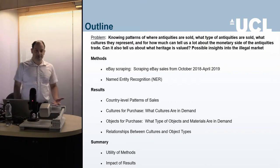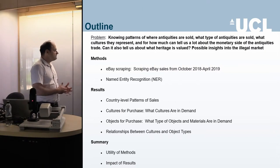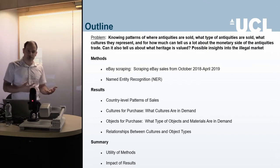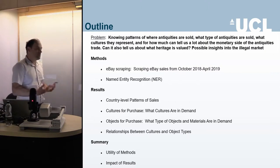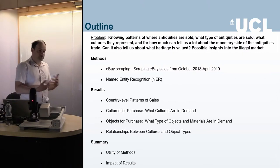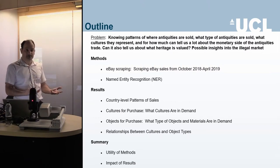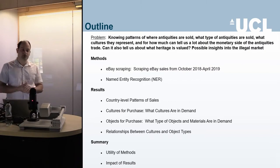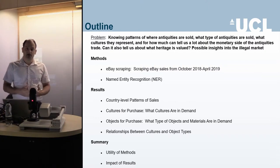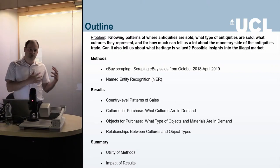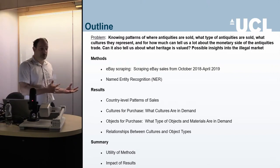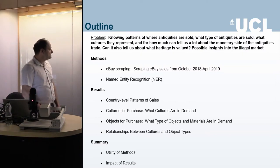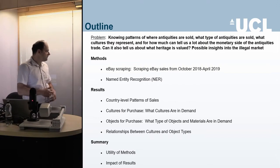eBay presents very structured information — locality and sale price are easy to get — but descriptions of what's being sold are trickier. Descriptions can be problematic: people don't always know what they're selling, and you get all kinds of spellings and varying levels of detail. We use a variety of methods, including named entity recognition, a form of natural language processing that classifies human language into meaningful categories, supplemented by word dictionaries.